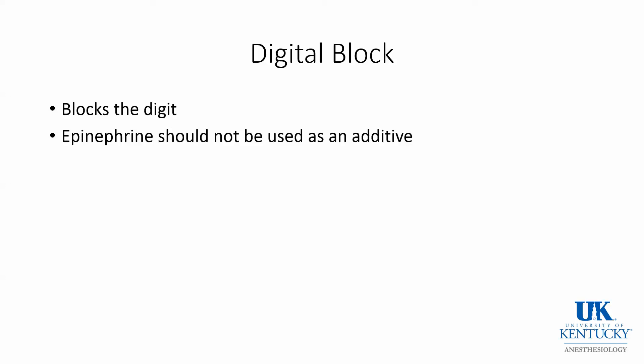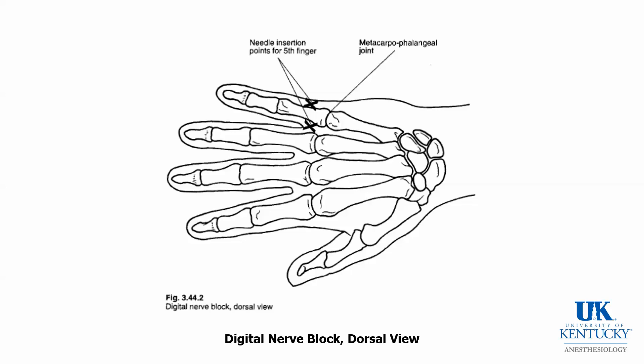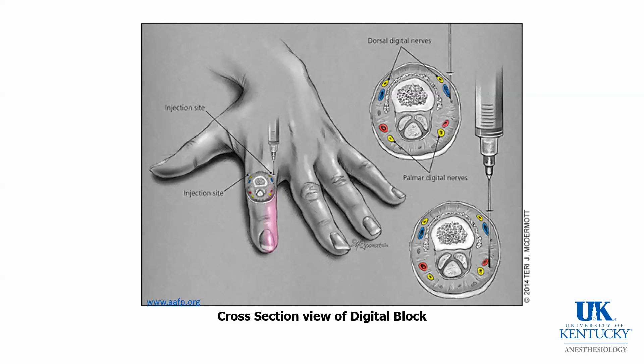For blockade of a given digit, two insertions are required on the lateral and medial aspects of the digit near the metacarpophalangeal joint. The small-gauge needle is inserted both lateral and medial to the digit and advanced down the sides of the digit. Blockade of both the palmar and dorsal digital nerves should be performed. This amounts to a field block, as the nerves at this level are too small to image with ultrasound.